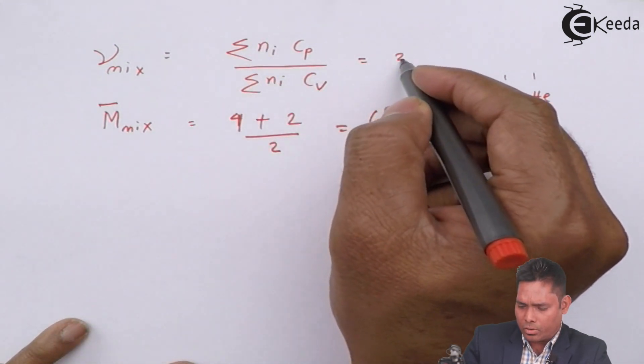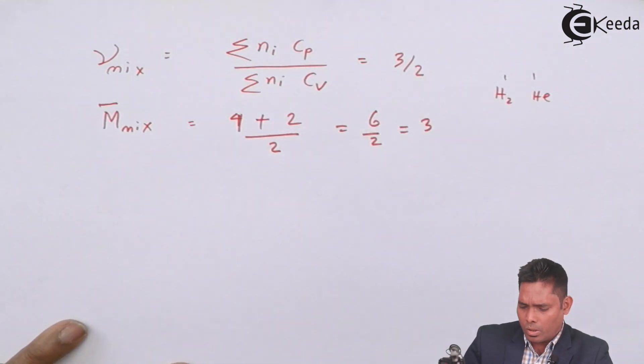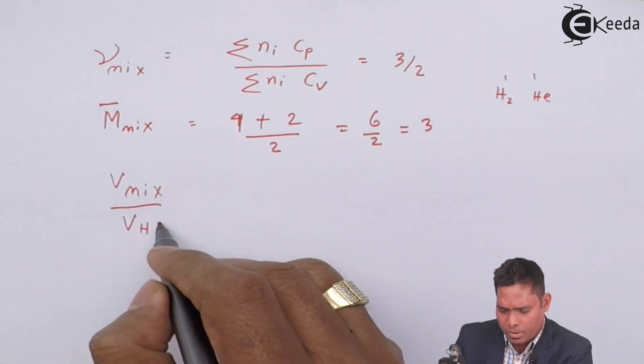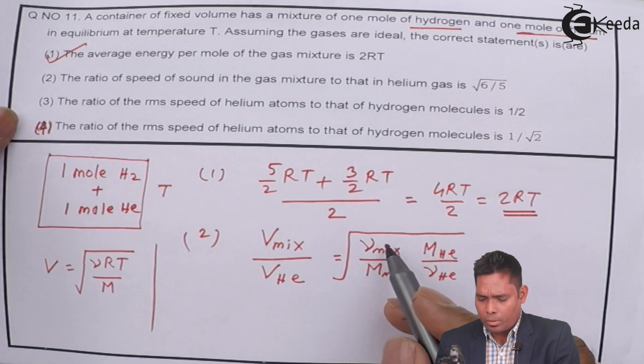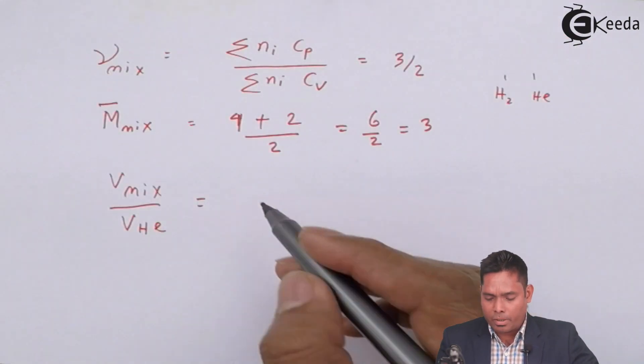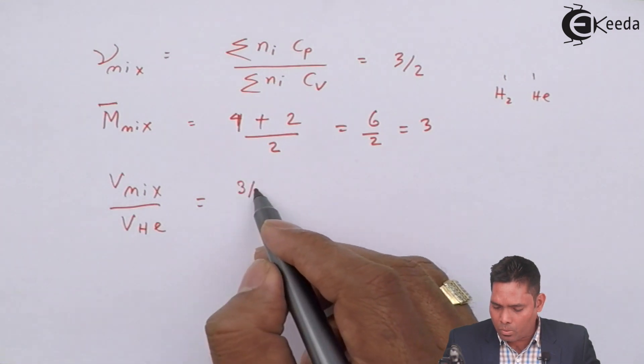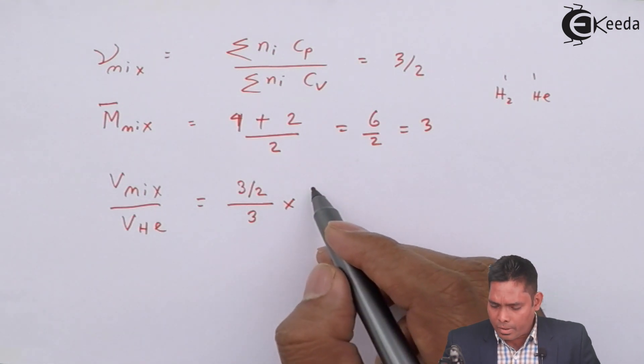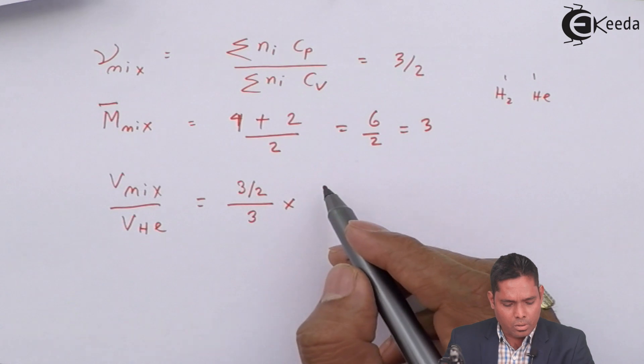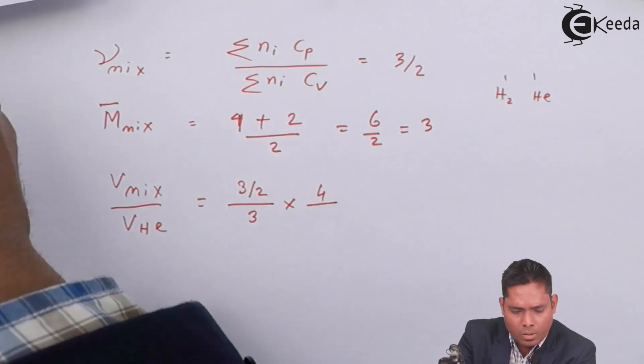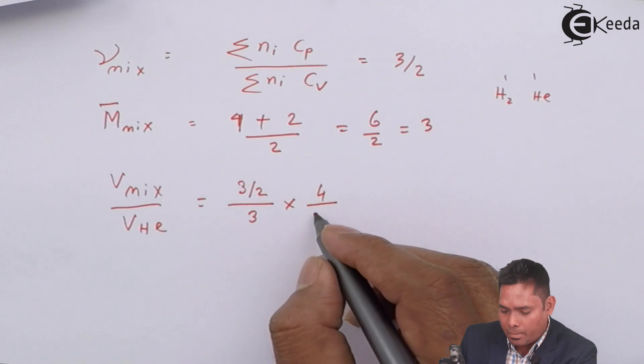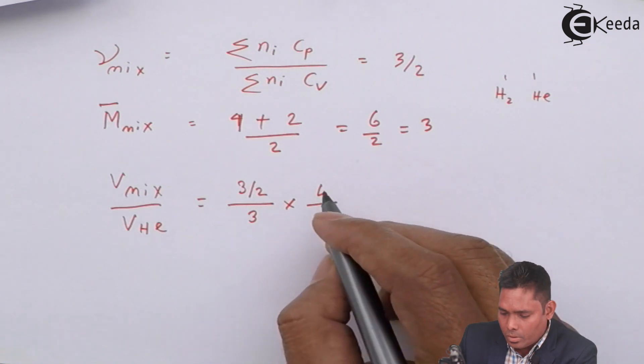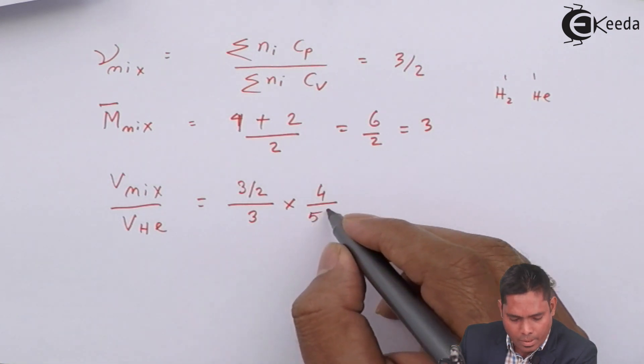Similarly, if you substitute this, you will get 3/2. If I use the formula V mixture upon V helium that I wrote earlier, you will substitute the values: gamma mixture is 3/2 divided by molecular weight of mixture which is 3, times molecular weight of helium which is 4, by gamma of helium which is 5/3 for monatomic helium.